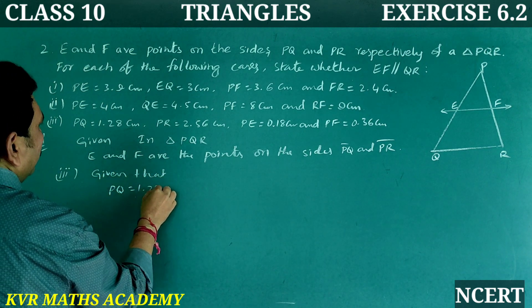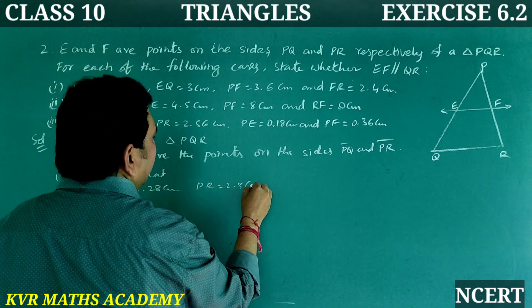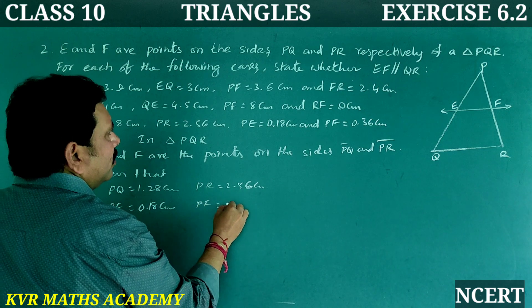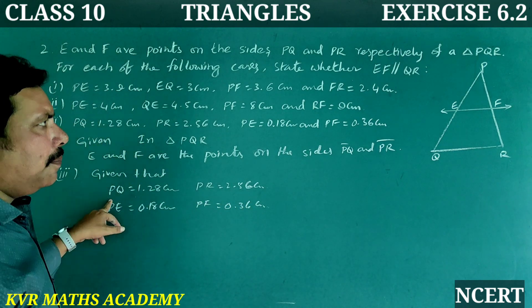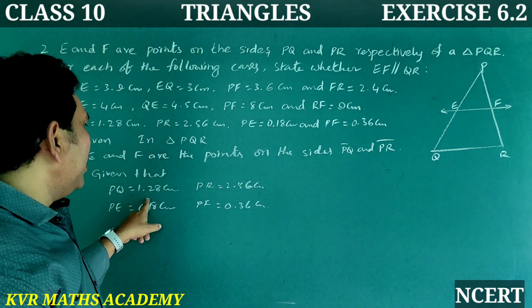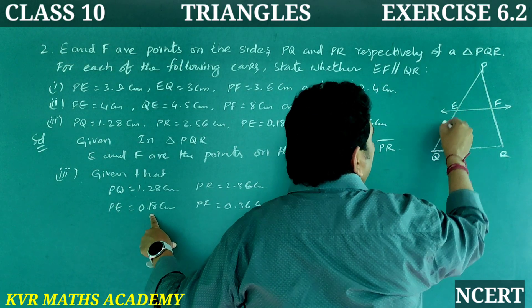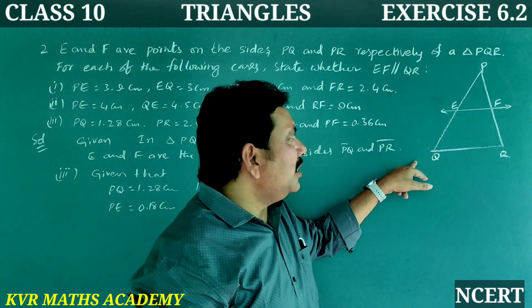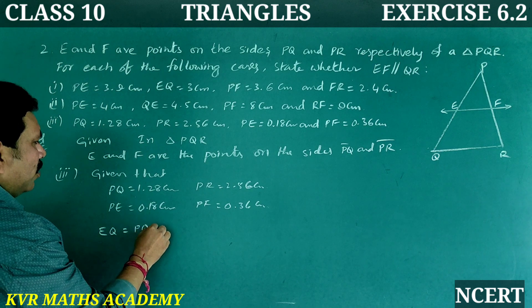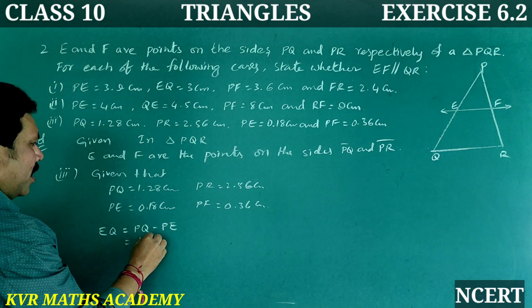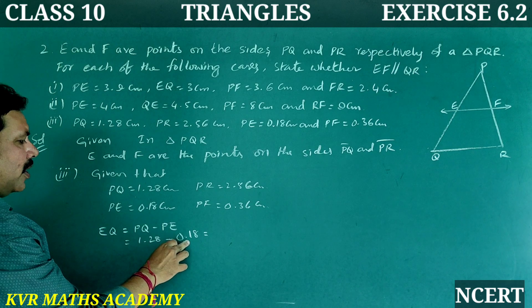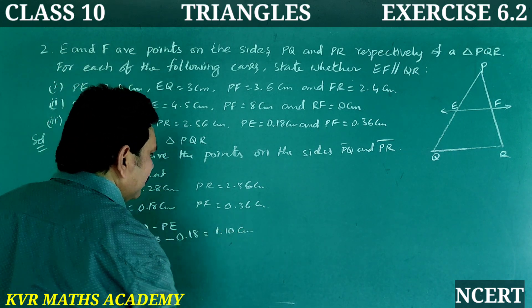Case 3 — Given: PQ is equal to 1.28 centimeters, PR is equal to 2.56 centimeters, PE is equal to 0.18 centimeters, and PF is equal to 0.36 centimeters. EQ equals PQ minus PE: 1.28 minus 0.18 equals 1.10 centimeters.